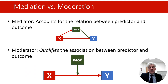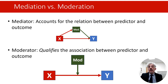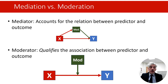A moderator is instead a variable that qualifies the association between a predictor and an outcome. What it means is that the strength of the association, or even the sign of the association between predictor and outcome, changes depending on the values of the moderator.